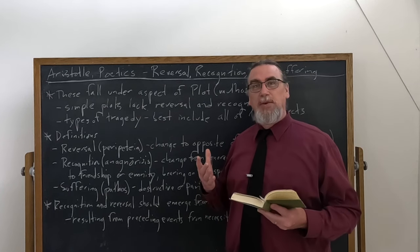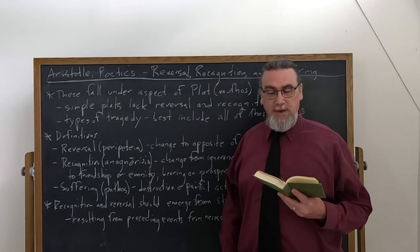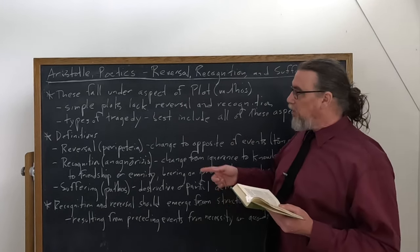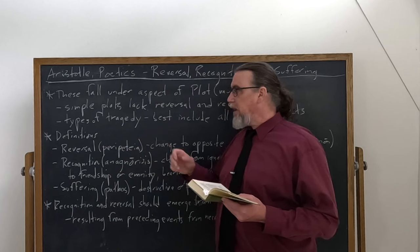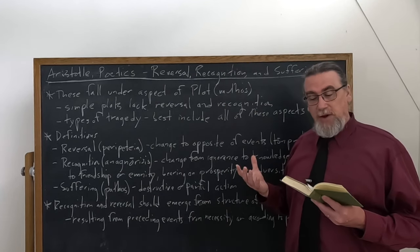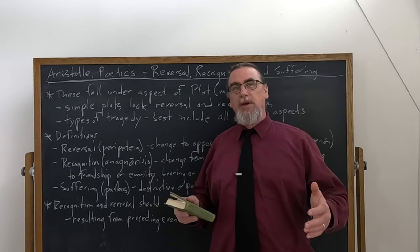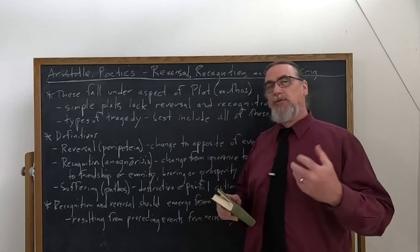So that said, what are these important aspects? So he's going to actually provide us with definitions or characterizations of each one of these. So let's start with reversal, which is peripeteia, something shifting as he says, it's a change. So it's a metabole. This is a term that he's using over and over here.